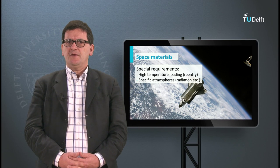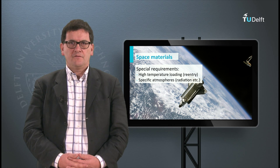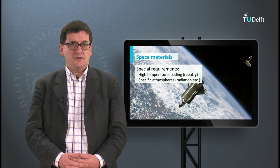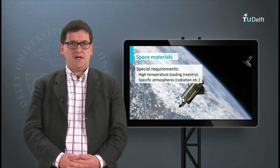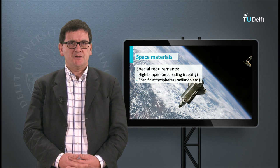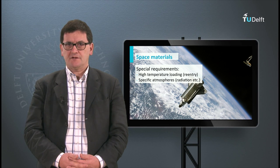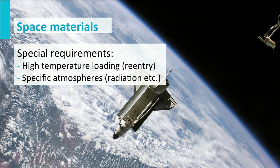If we look at space applications, we encounter different limits to materials. When the space vehicle returns to earth making a re-entry into the atmosphere, the temperatures are extremely high. In space itself, where no air exists, there is no friction — the material heats and cools down only when the surface is turned to or away from the Sun. However, the materials are also exposed to other threats, like radiation and high velocity impact of small particles.